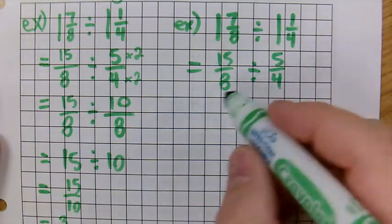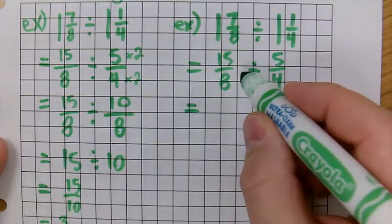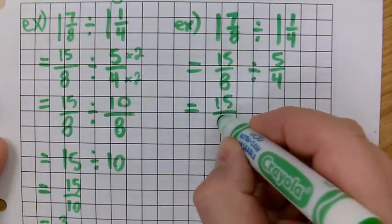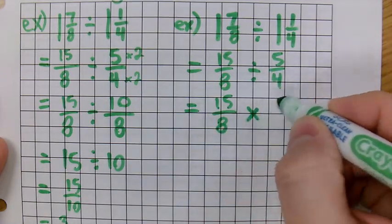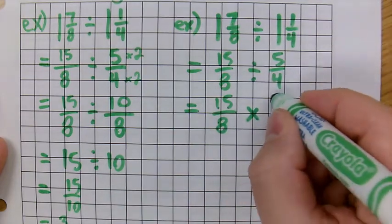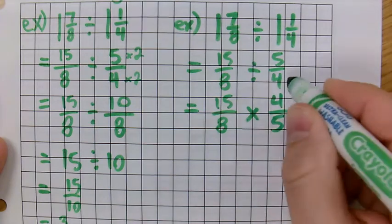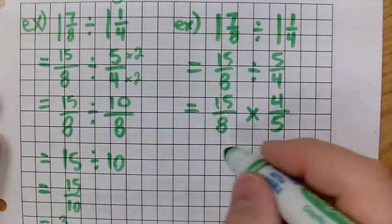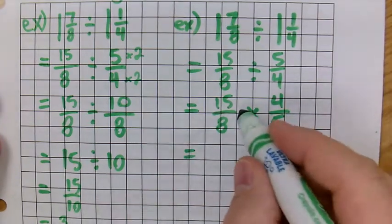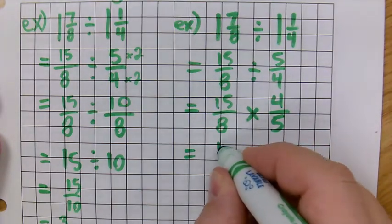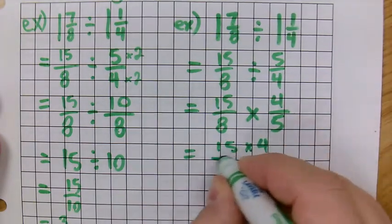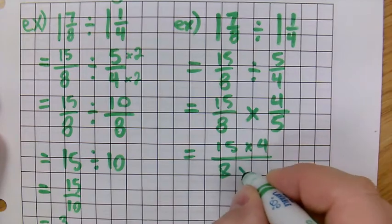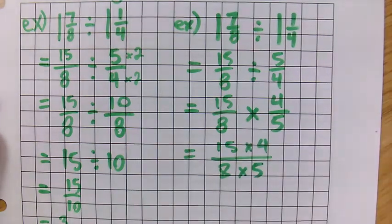But what if we wanted to multiply by the reciprocal? So we keep our first fraction the same, and we change the division to multiply, and then we flip this upside down, 4 over 5, to make the reciprocal fraction. So then, we take 15 times 4, all over 8 times 5.